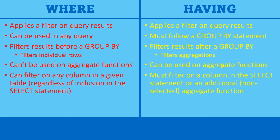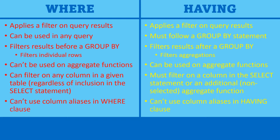In the WHERE clause, you can filter on any column in a given table, regardless of whether or not you include that column in the SELECT statement. In the HAVING clause, you can filter on any column in the SELECT statement, but if you're going to filter on any additional columns not in the SELECT statement, that must be an aggregate function. And in neither clause can you use column aliases — in both cases, that will generate an error.